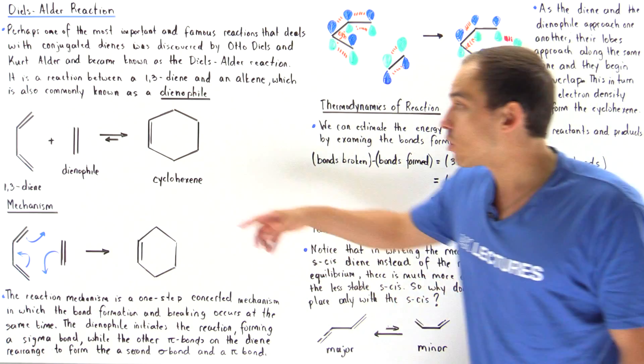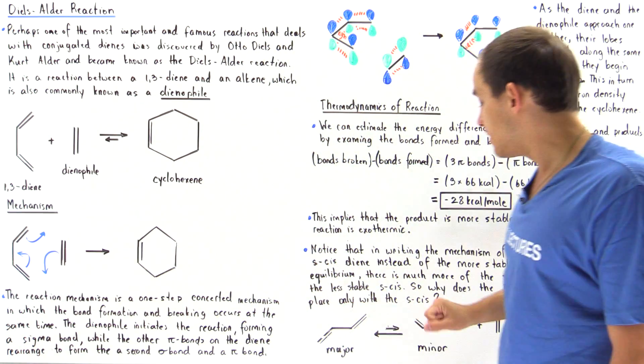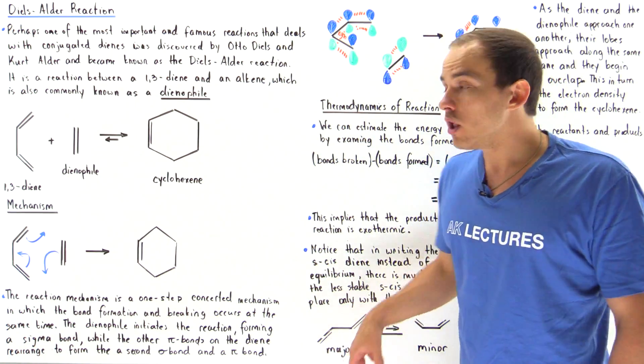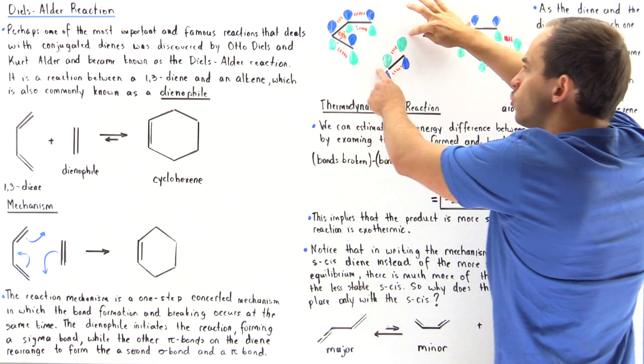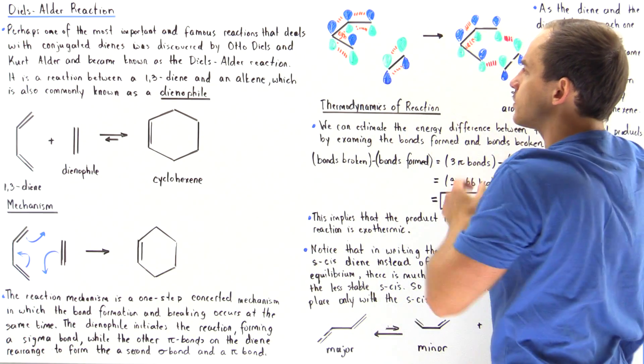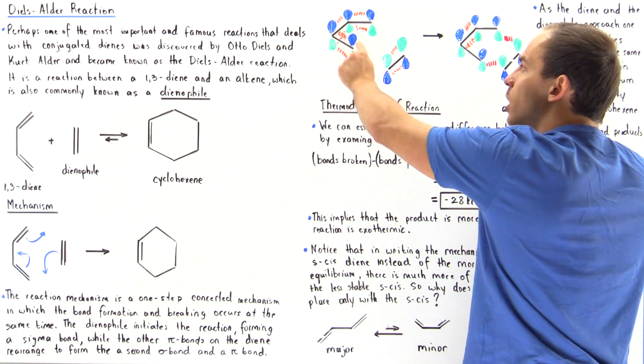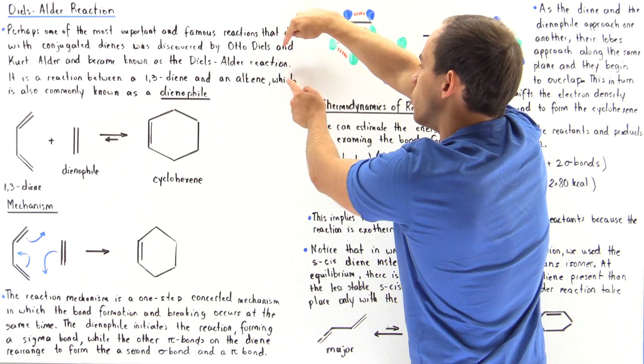So why is it that our alkene, the dienophile, has to react specifically with our s-cis and not the trans? Well the reason is if we examine this overlap between our green sections of the orbitals, the green lobes, if this was a trans then this orbital will be found somewhere here.